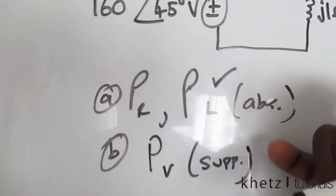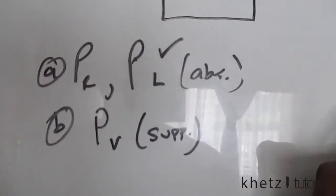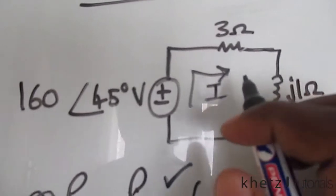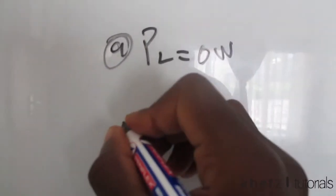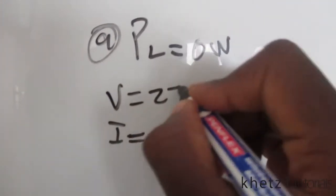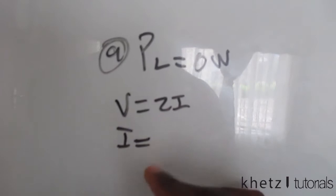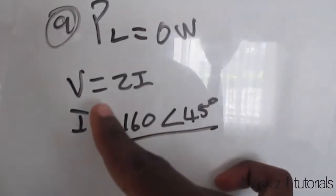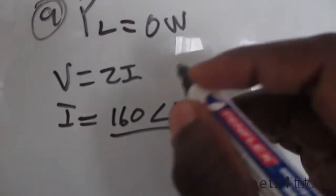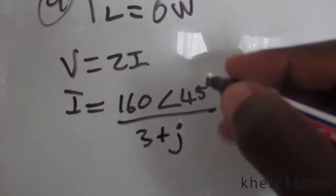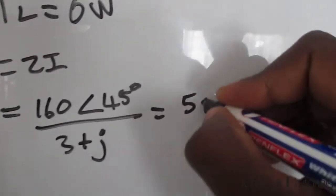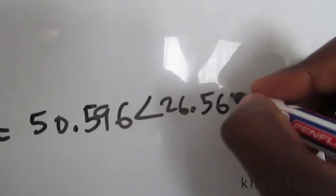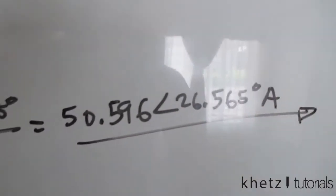Now let's find the average power absorbed by the resistor. First we find the current I in the circuit, which flows through all elements. From V = ZI, we get I = V/Z. Our voltage supplied divided by the total impedance of 3 + J gives a current of 50.596 amperes at an angle of 26.565 degrees.